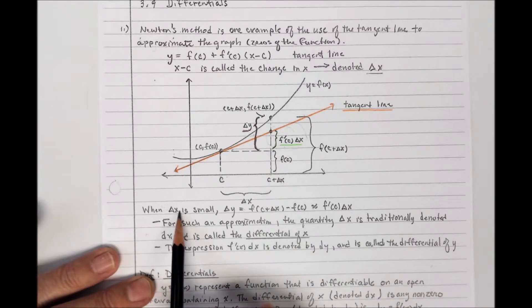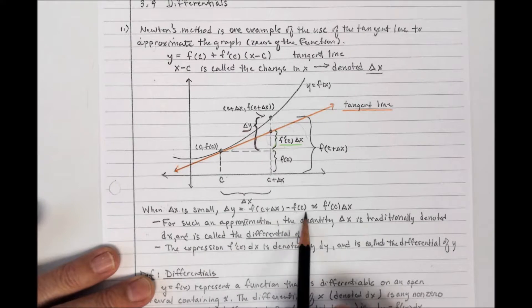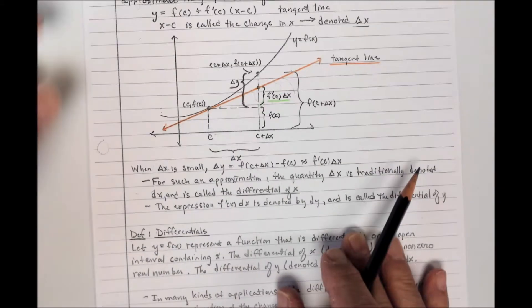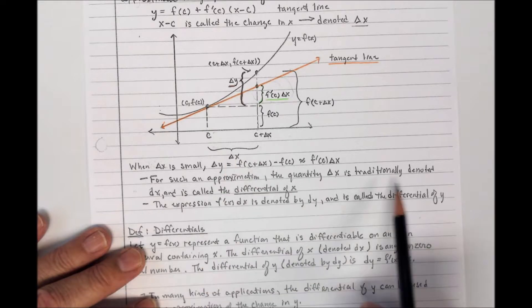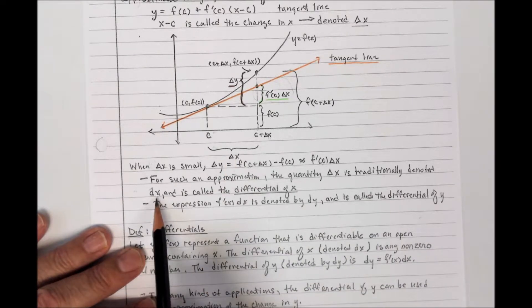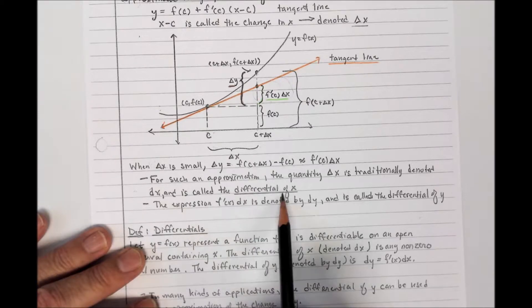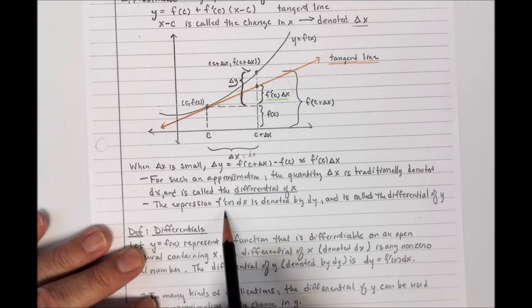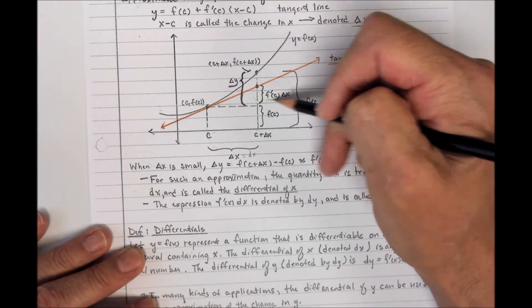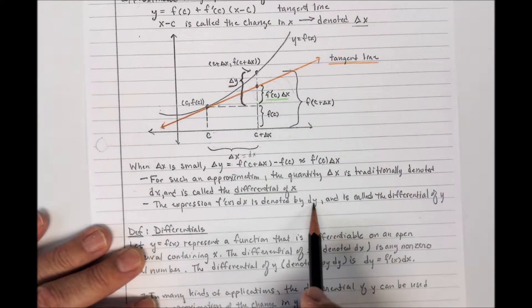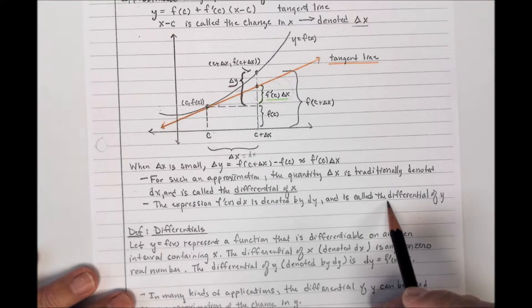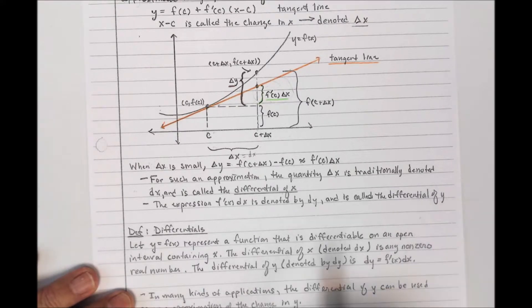If delta X is small, delta Y is well approximated by F prime of C times delta X. When this type of approximation is done, the delta X is traditionally denoted as DX. You've seen DX before in Leibniz notation DY/DX, but here DX is called the differential of X. And F prime of C times DX is what we denote as DY — the differential of Y.